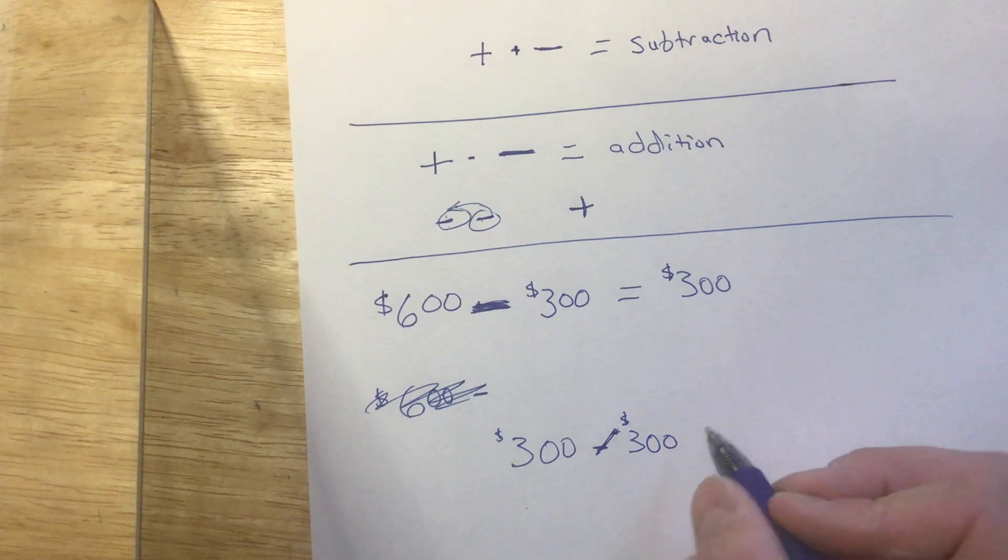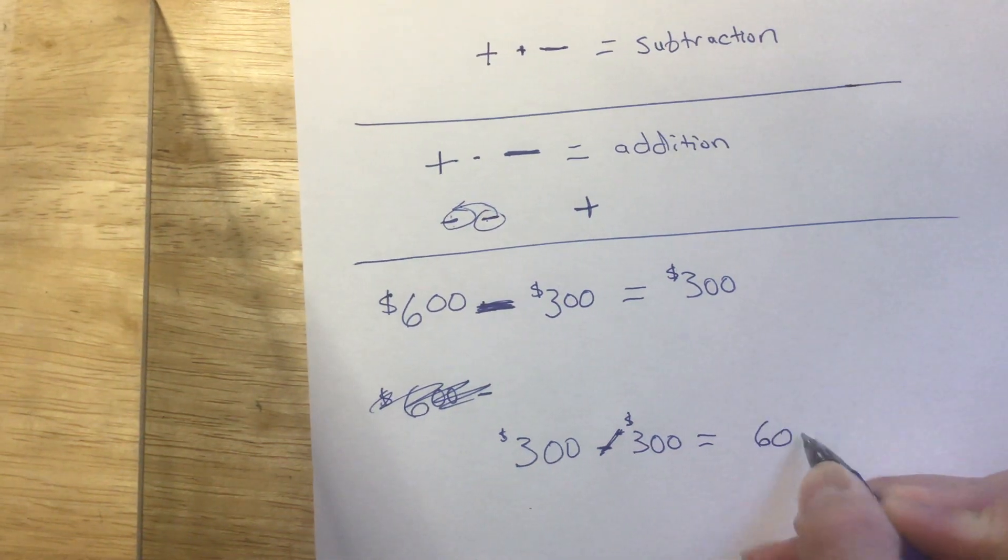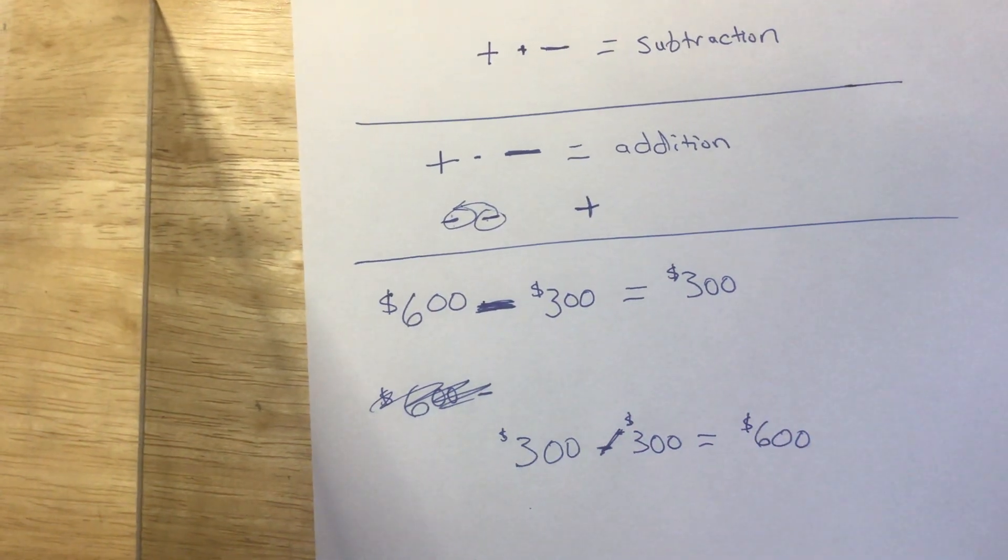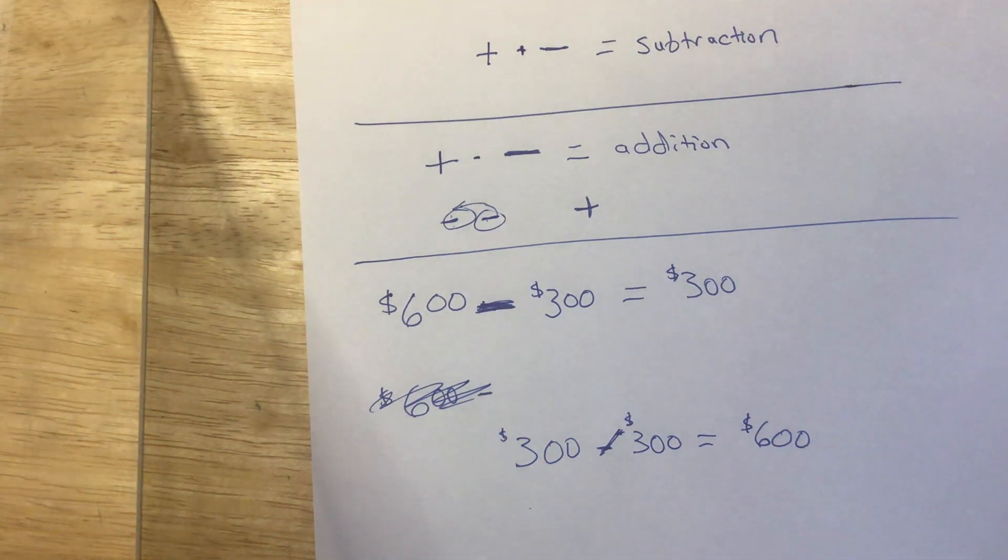So again, that's like adding it. That's like, oh, I'm back to having $600 I can spend. Because I don't have this debt anymore. They took away the debt. So now it's money that I can actually use.